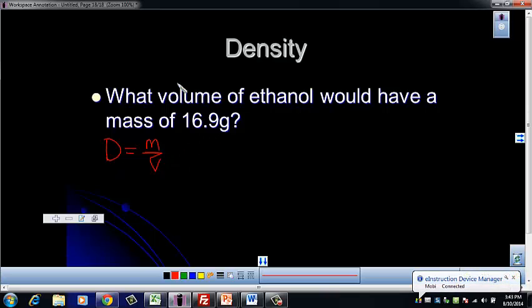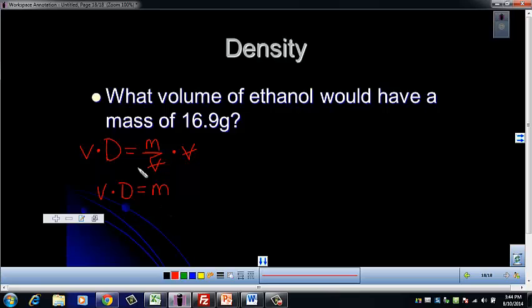If we're trying to solve for volume, we need to get volume by itself. Let's multiply both sides of the equation by volume. Then volume will cancel, and you'll have volume times density equals mass. We want to get volume alone, so divide both sides by density. These will cancel. Volume equals mass divided by density.